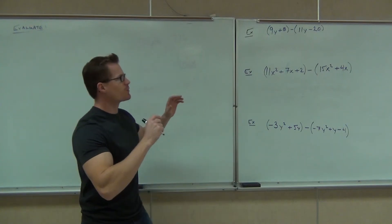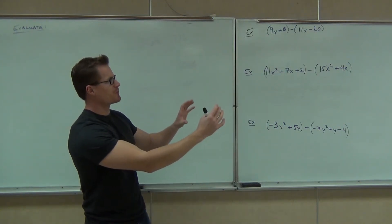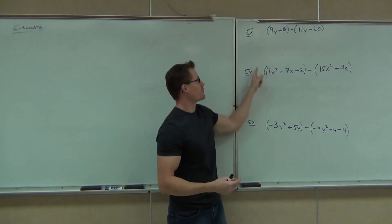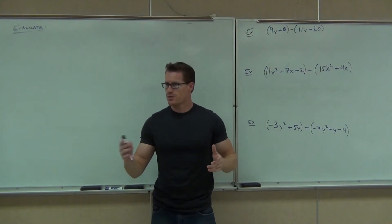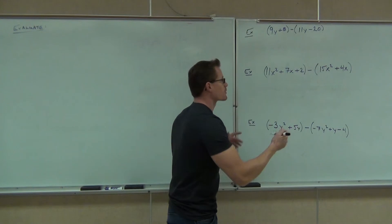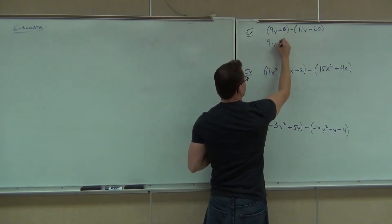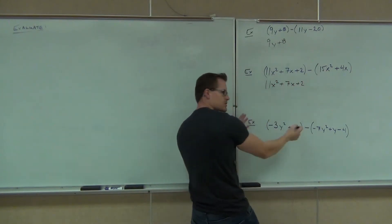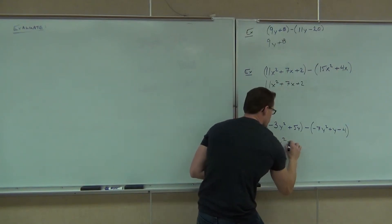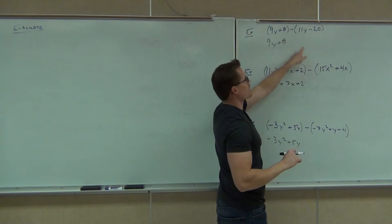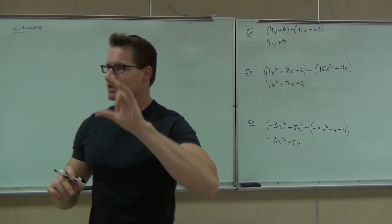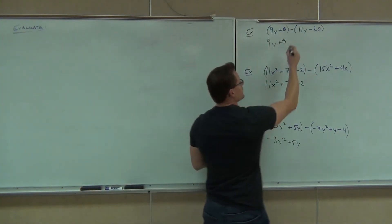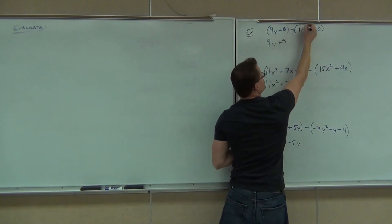Okay, so first one: we've got 9y plus 8 — that's our polynomial — minus another polynomial, 11y minus 20. The first parentheses in every case really aren't going to change much; there's no number out front. We'd look for any negatives or a number, and if we had one, we'd have to distribute it. But there's none in either case, so we get to drop those. However, those minuses — subtracting those polynomials — means you have to subtract every term in the parentheses. That negative really stands for a negative 1, and we're going to multiply that by every term inside.